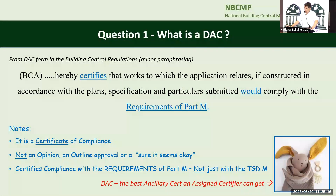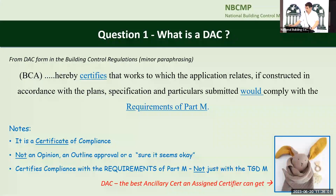A key thing for assigned certifiers: all certifiers love ancillary certs. The fire cert and the DAC are the best ancillary certs you're going to get because the Building Control Authority has certified that it is compliant. So if you don't read the DAC, deviate from it, or make changes, the assigned certifier is now certifying the building — not the Building Control Authority anymore. If you sign the certificate of compliance at completion while deviating from the DAC, you are taking responsibility for the design. Assigned certifiers should be very cautious about deviating from the DAC or fire cert design, because it's the best comfort blanket you're going to get.